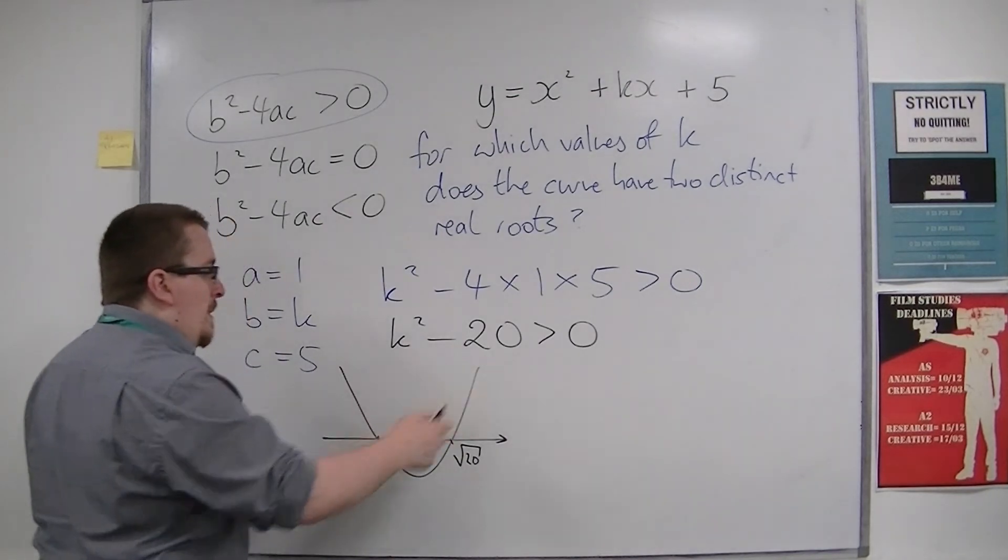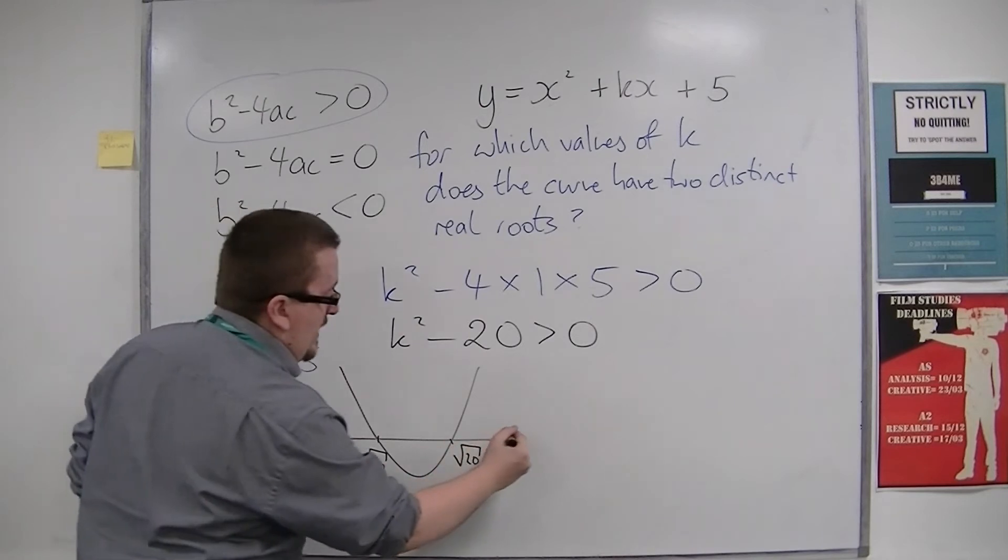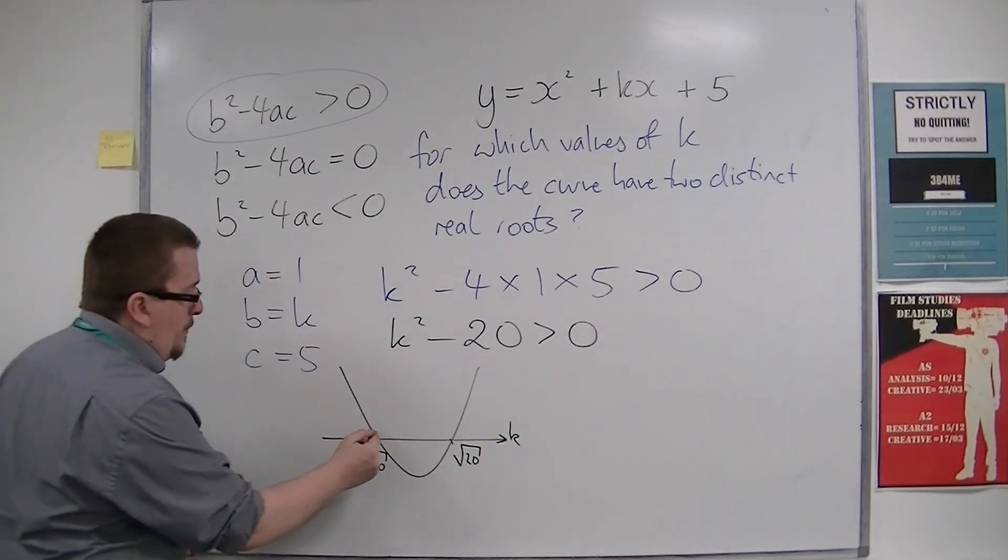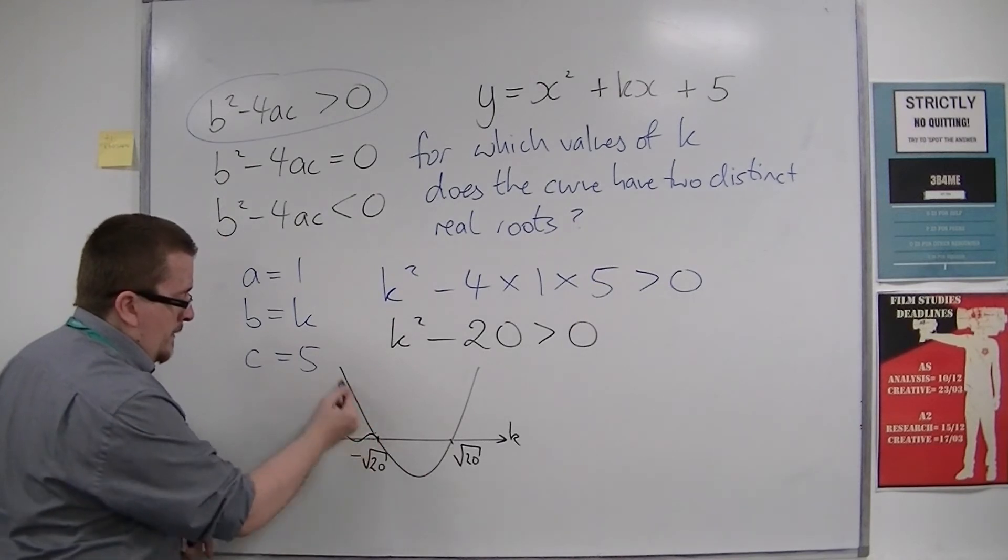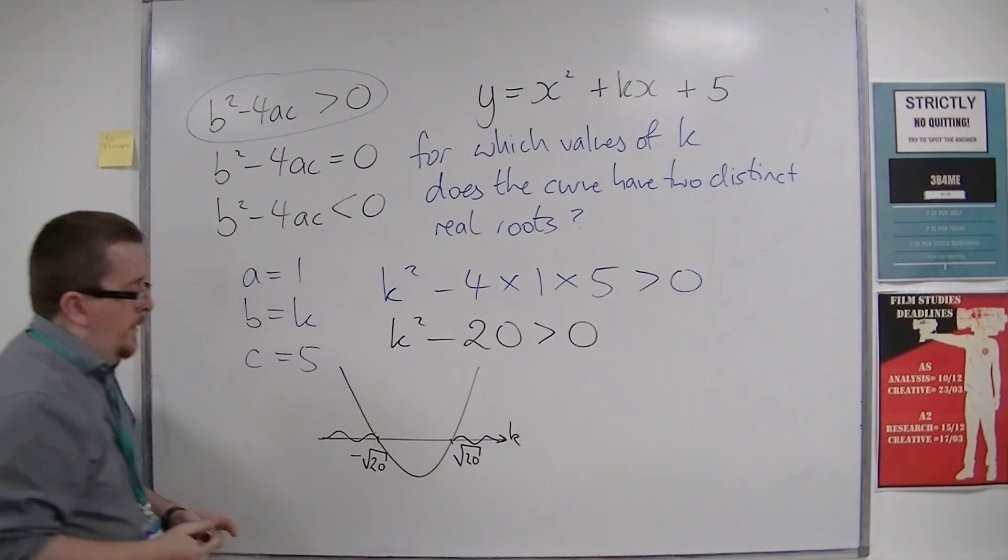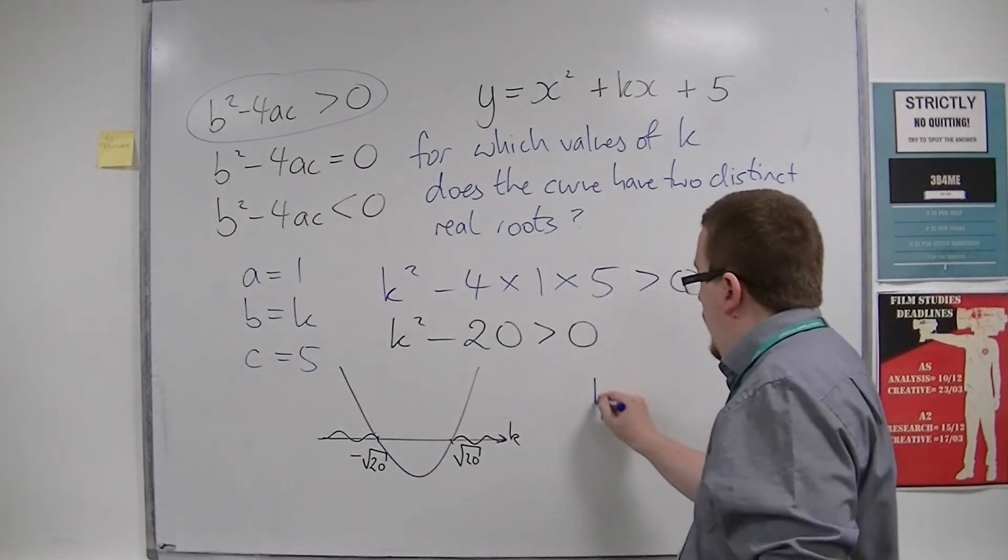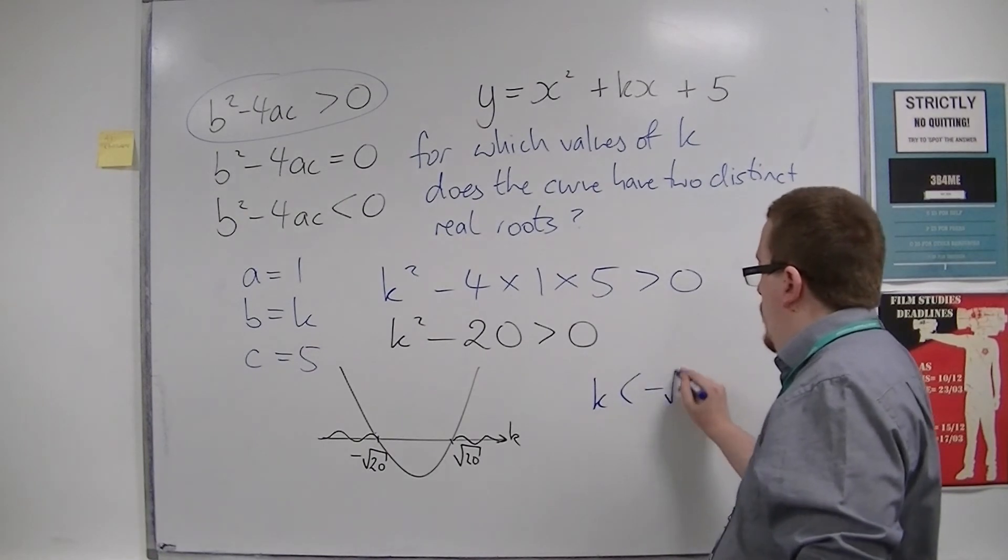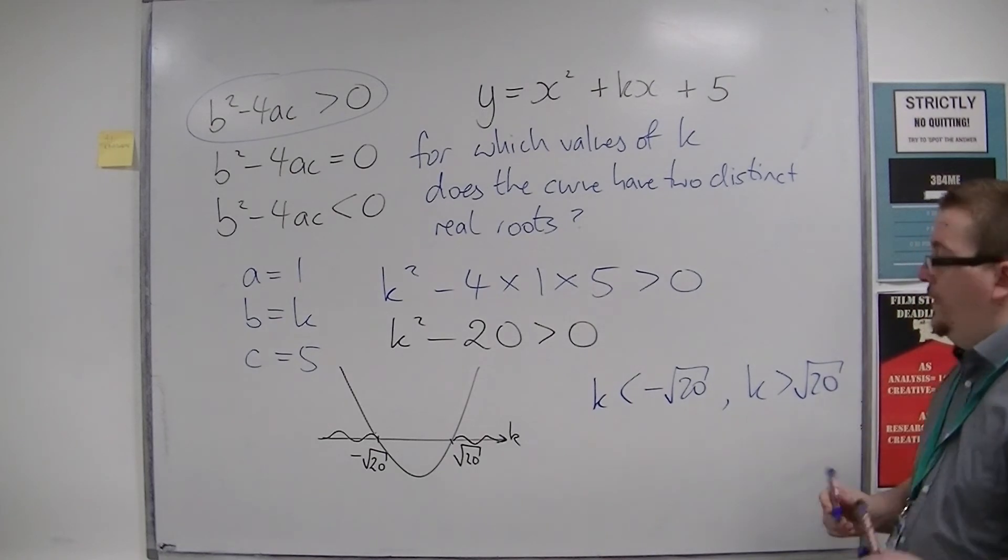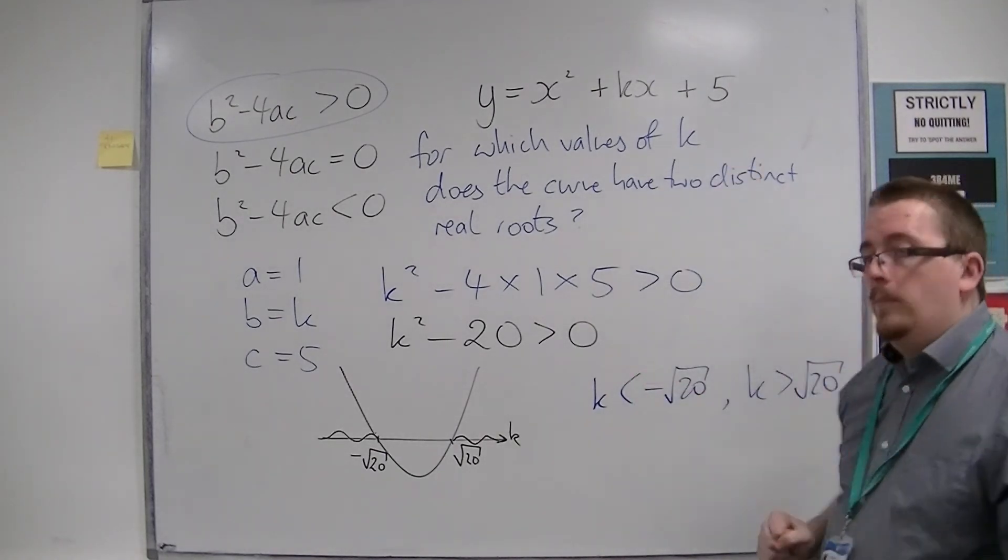So where is the parabola above the x-axis, or k-axis as it should really be called now, because we're not working with x? It's above it here, and it's above it here. So we have two regions: k is less than minus root 20, and k is greater than positive root 20. And that solves this problem.